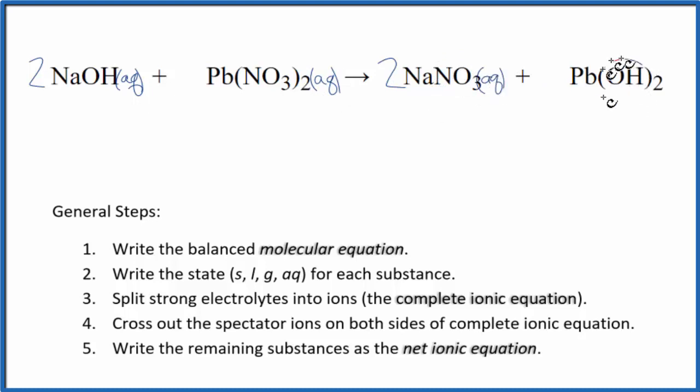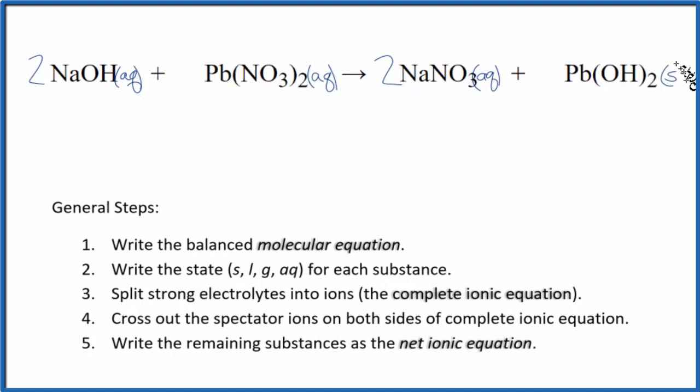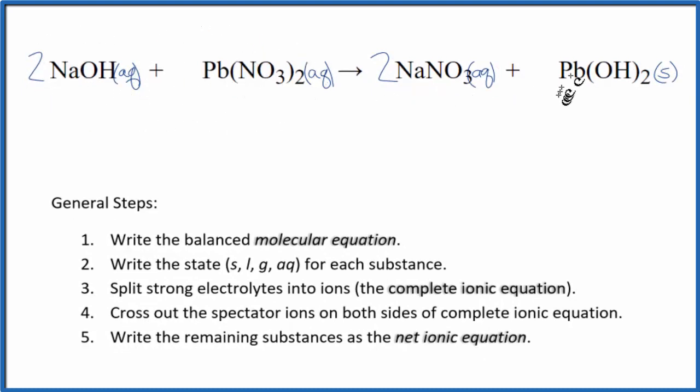So in general, hydroxide compounds are insoluble. There are exceptions. Sodium hydroxide, that's an exception. Group 1 elements, they're often soluble. But for hydroxides in general, insoluble. They're not going to dissolve in water, so they're going to be a solid. So when these two substances react, this will form this solid. It'll be a precipitate. You'll see it fall to the bottom of the test tube.